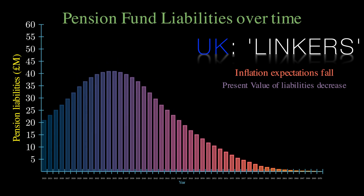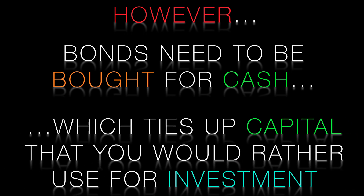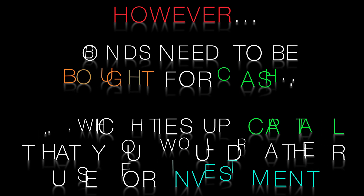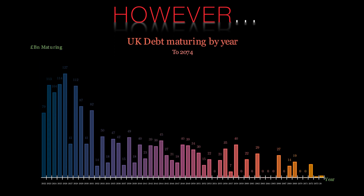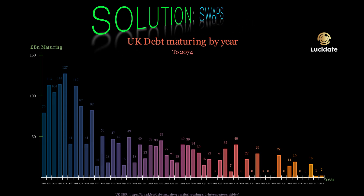So all seems good and we can use the bond market to hedge our risks, but there are two subtle problems. Firstly, the purchase of government bonds requires cash — we have to pay for the bond. This ties up capital that our pension plan would rather use to invest in products like equities to meet those liabilities. The second problem is scarcity. There are only a certain number of bonds in issue and there are some gaps in maturity, as can be seen by this chart of UK government debt maturing by year. This is where interest rate swaps come in.